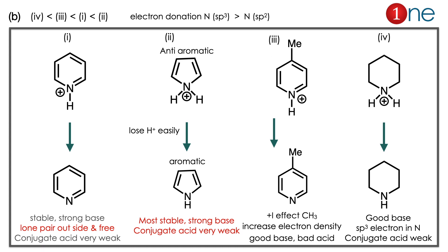Here you have to find the order by conjugate base character. Whenever they ask the question of orders, you have to find the extremes. Because of the obvious reason, the protonated pyrrole is anti-aromatic; after losing H⁺, it will become aromatic — going from unstable to stable form. So it is a very strong acid. On the other hand, the structure that goes from anti-aromatic to aromatic can donate H⁺ easily, so it will be the more acidic one. Then you have to compare the acidity between the first and third structures: the third one has a methyl group, which is a good electron donor, increasing electron density on nitrogen. So the conjugate base will be stronger, making it a weaker acid.